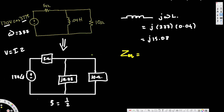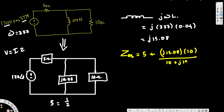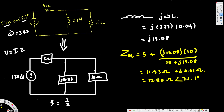For the equivalent impedance Z_eq, we place the 5 ohms in series with the parallel combination. The parallel combination uses product-over-sum: j15.08 times 10, divided by (10 + j15.08). Calculating this gives 11.95 + j4.61 ohms in rectangular form. Converting to polar form gives 12.80 ohms at an angle of 21.1 degrees.